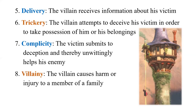Think of Aladdin — a magician comes in the form of Aladdin's uncle because he has the information. The sixth one: Trickery. The villain attempts to deceive his victim in order to take possession of him or his belongings. In the story of Aladdin, the magician comes in the form of the uncle, speaks to the mother, and borrows the boy. Then Complicity — the victim or protagonist believes in the enemy, submits to the deception, and thereby unwittingly helps the enemy.